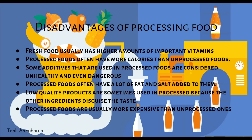Disadvantages of processing food. Fresh food usually has a higher amount of important vitamins. Processed foods often have more calories than unprocessed foods. Some additives used in processed foods are considered unhealthy and even dangerous. Processed foods often have a lot of fat and salt added to them. Low quality products are sometimes used in processed foods because the other ingredients disguise the taste. Processed foods are usually more expensive than unprocessed ones.